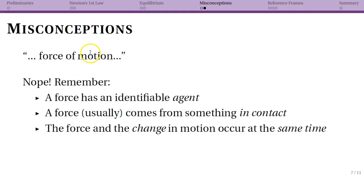So if you say a force of motion, well what is causing that force? You can't point to the motion and say this is causing the force. Motion is a property that the object has. So the agent should be another physical object, like the earth causes the force of gravity.